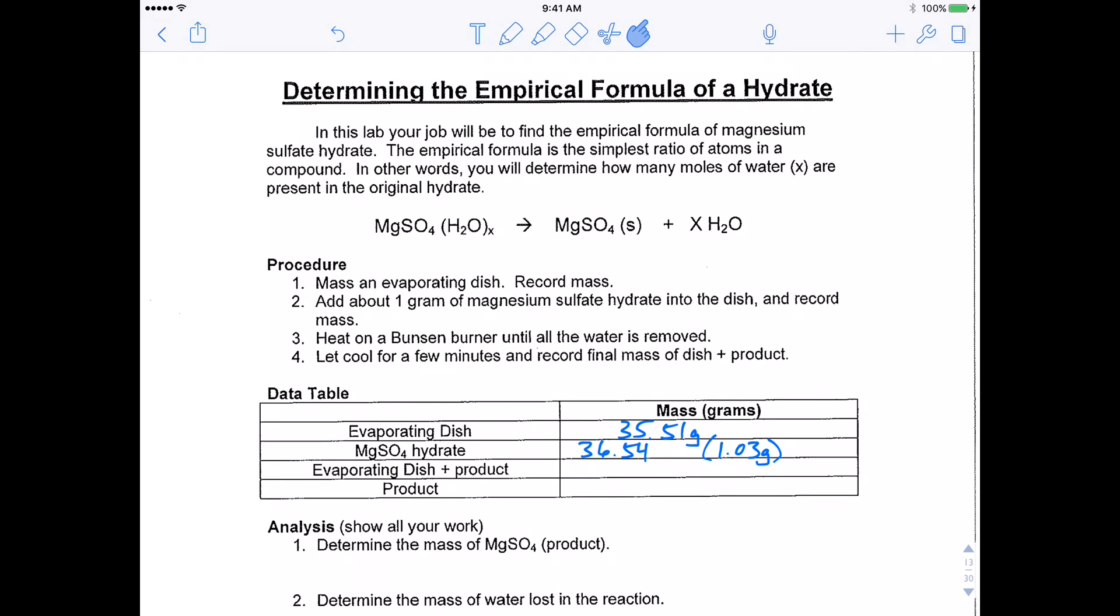Hey everybody, this is Mr. Mott. What we're going to do is go over the calculations involved with our determining the empirical formula of a hydrate lab. Sounds really fancy, but all we're trying to do is figure out in our hydrate, which was some Epsom salts or magnesium sulfate, we're trying to figure out how many water molecules were attached to the MgSO4. And so what we did in our lab is we heated it up and what we did is we decomposed it into the solid and then the water, which turned out in the form of water vapor. And what we were trying to figure out was how many water molecules were liberated and also how many water molecules were attached there.